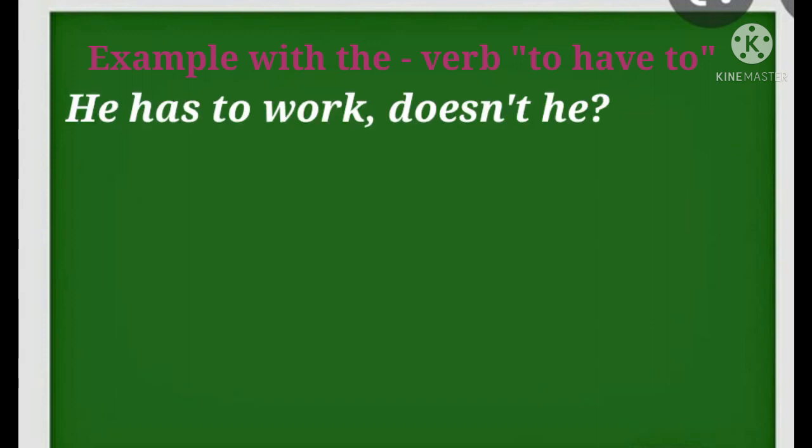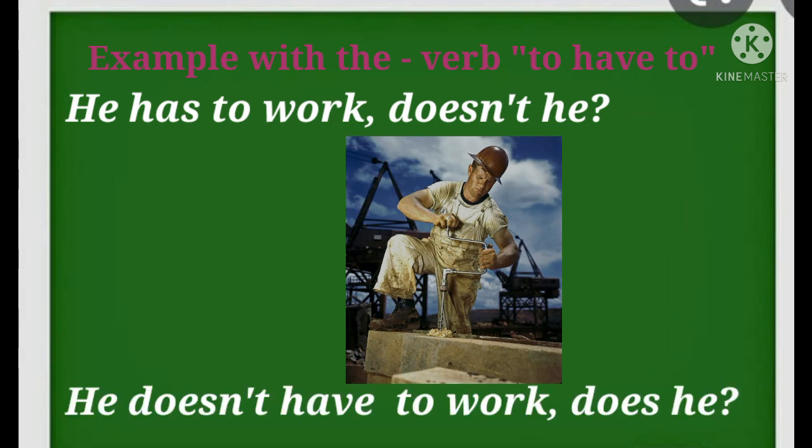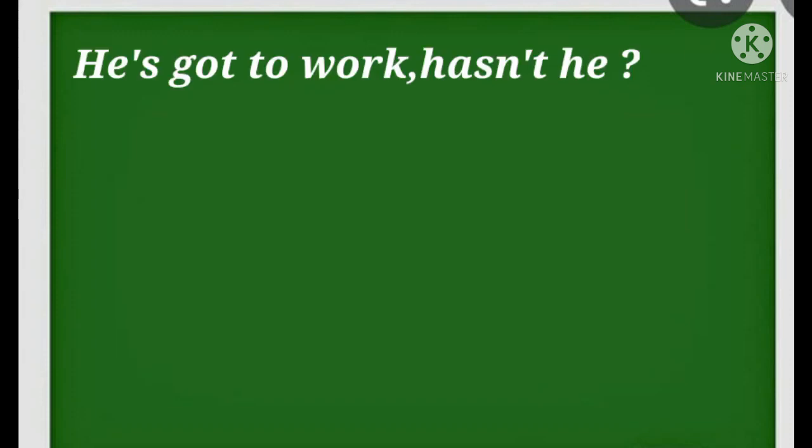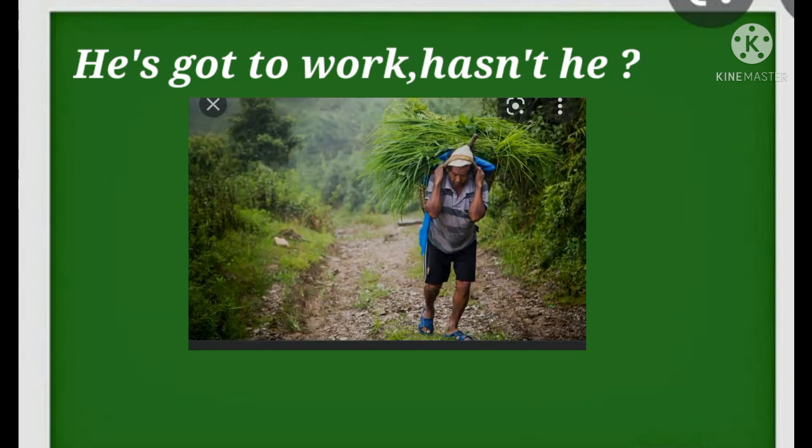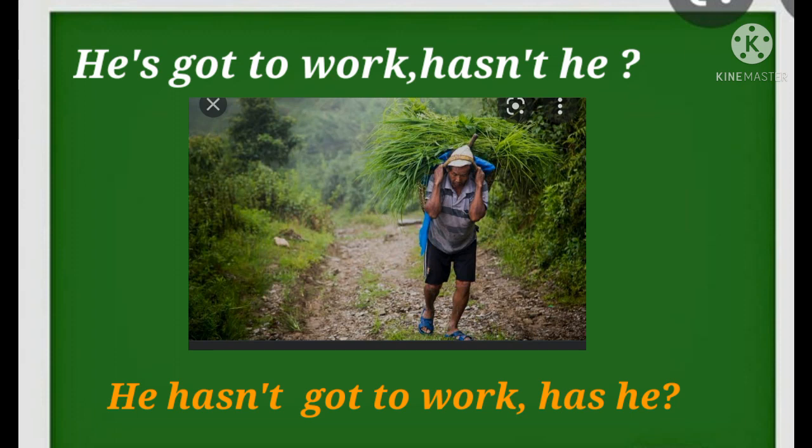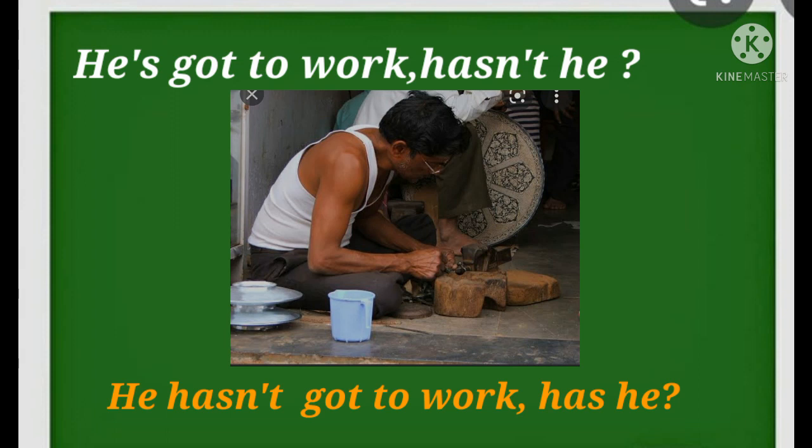Let's look at the example with the verb to have to, to show an obligation. You can say: he has to work, doesn't he? Or he doesn't have to work, does he? If you add the word got into the sentence and say he has got to work, then the tag becomes hasn't he? And in the negative sentence: he hasn't got to work, has he?